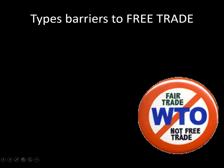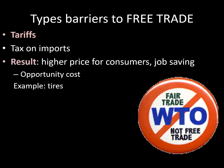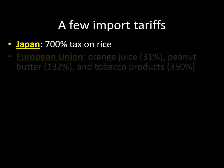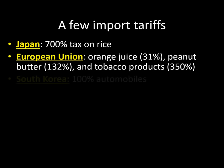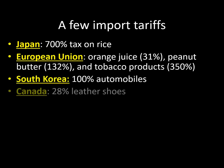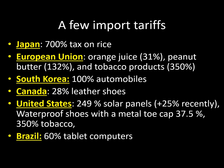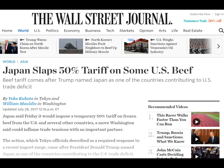Here are types of barriers to free trade. There are tariffs — just putting a tax on imports makes them more expensive. Here are a few important import tariffs that are pretty high: Japan has a 700% tax on imported rice; the EU has some interesting ones; South Korea has tariffs on automobiles; Canada has 28% on leather shoes. There are also US tariffs and Brazil's tariffs. For example, Japan puts a tariff on US beef, making it more expensive for Japanese consumers, and US ranchers don't get another place to sell.